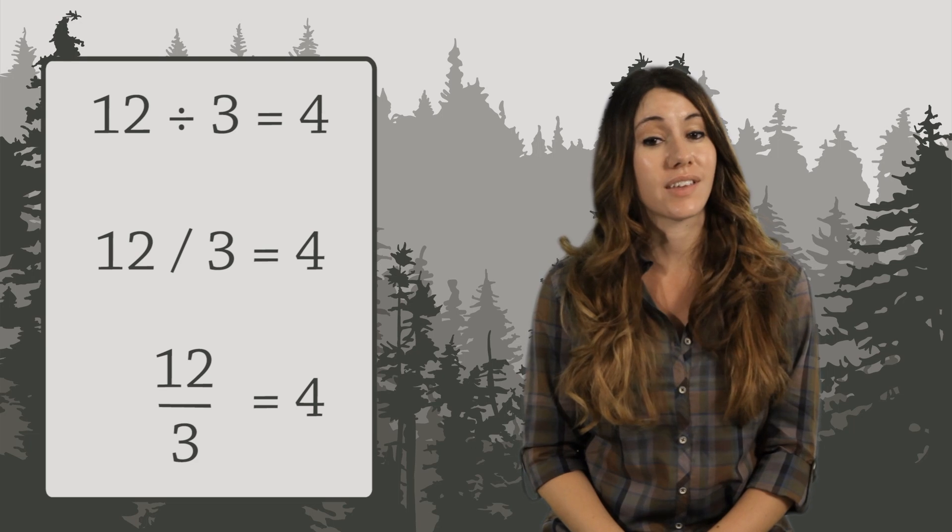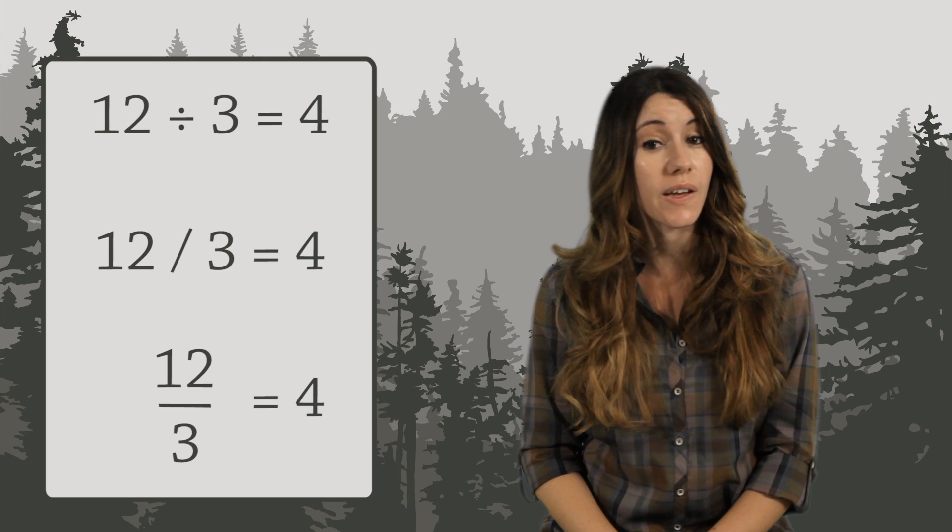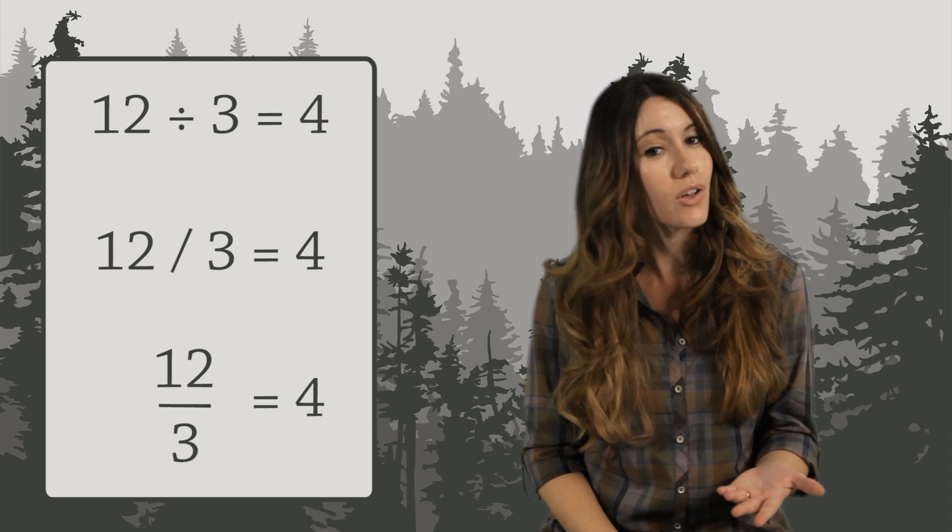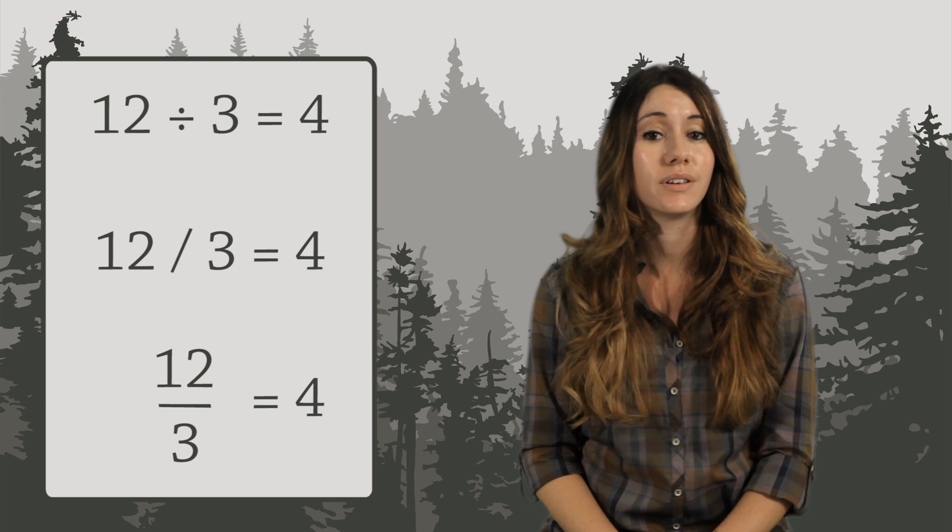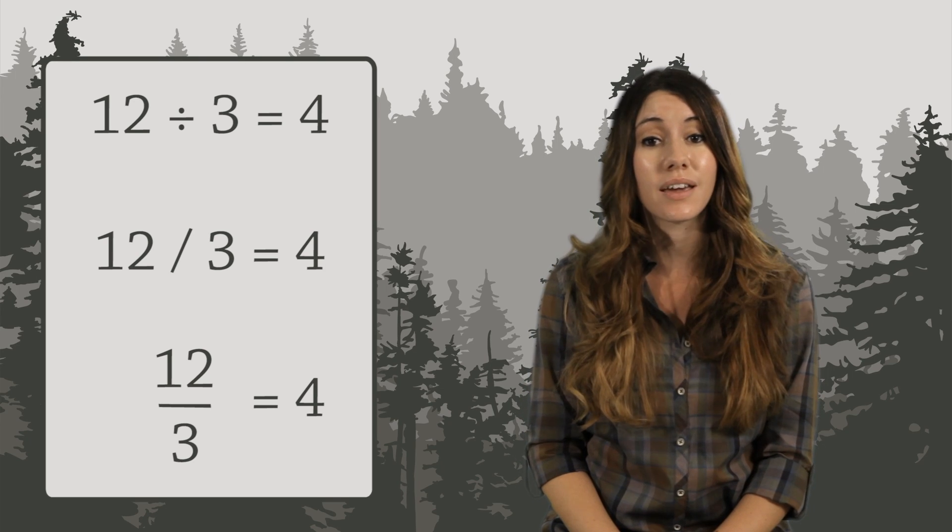People often say this as 12 over 3 equals 4. But you can also say it as 12 divided by 3 equals 4. These all mean the same thing. They just look a little different.